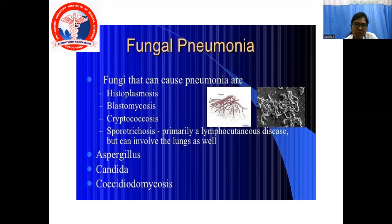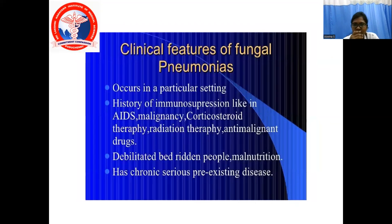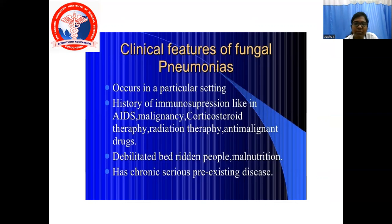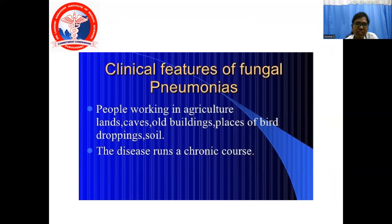Fungal pneumonia: fungi that can cause pneumonia include Histoplasma, Blastomyces, Cryptococcus, Sporothrix — primarily a lymphocutaneous disease but can involve the lungs — Aspergillus, Candida, and Coccidioides. Clinical features: it can occur in a particular geographic setting. History of immunosuppression such as AIDS, malignancy, corticosteroid therapy, radiation therapy, or antineoplastic drugs may be present. Debilitated, bedridden people and malnutrition are also predisposing factors. People working in agricultural land, caves, old buildings, places of bird droppings, and soil are at more risk. The disease usually runs a chronic course — symptoms duration will be chronic in fungal pneumonia.